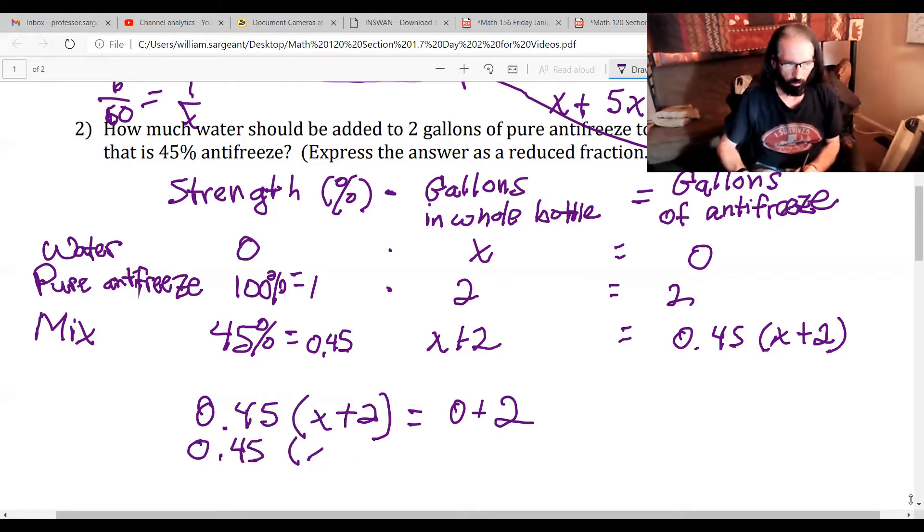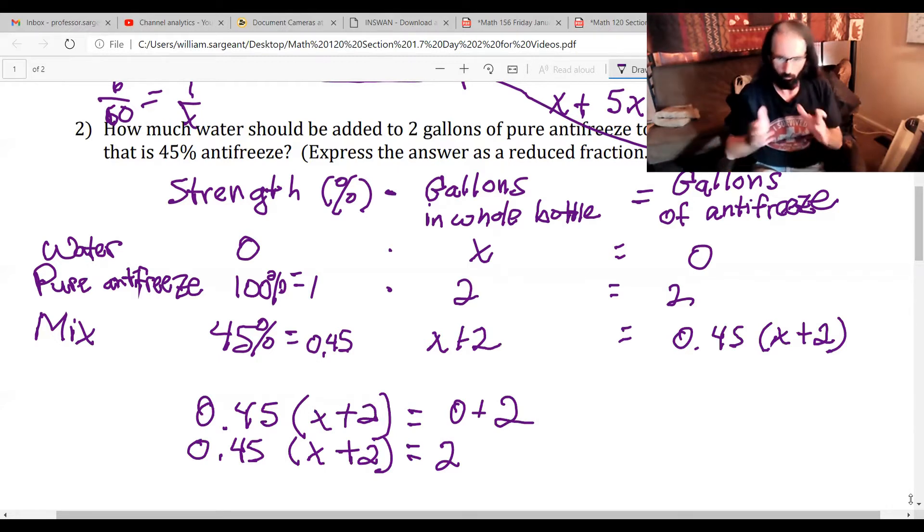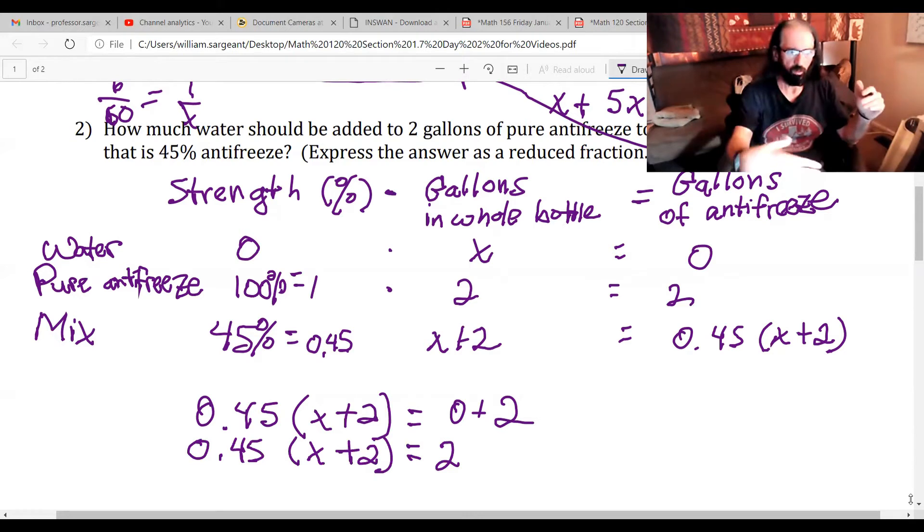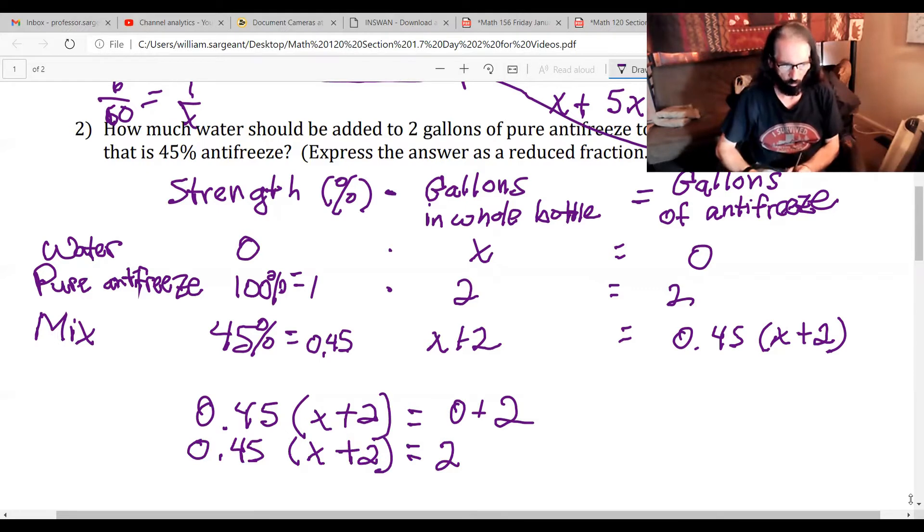Most people are going to think to distribute that 0.45 on the left side. However, if you think about what's wrapped around x there, first thing you do is you add two, then you multiply 0.45 to that whole thing. You could unwrap that by reversing the order and the operation, so I could divide both sides by 0.45.